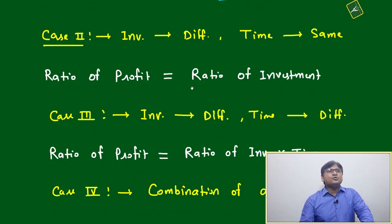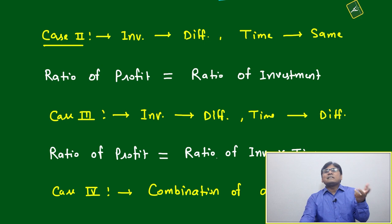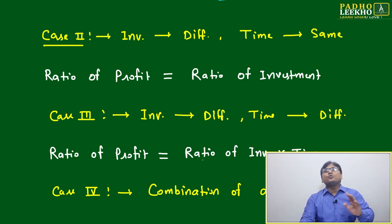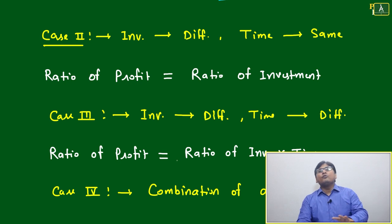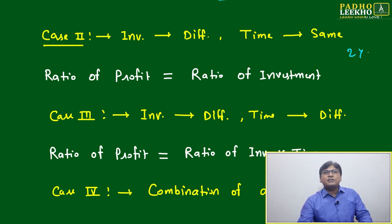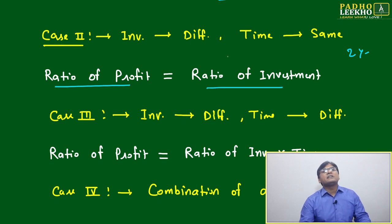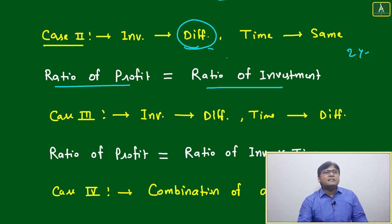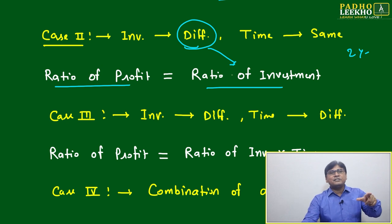Case two applies when investments are different but the time period is the same. For example, one person invested 10 lakh for two years, another invested 5 lakh for two years, and another invested 3 lakh for two years — all invested for two years but with different amounts. In this case, just take the ratio of the investments. If time is different, take the time ratio; if investment is different, take the investment ratio.